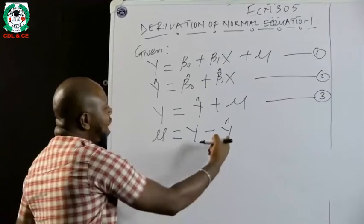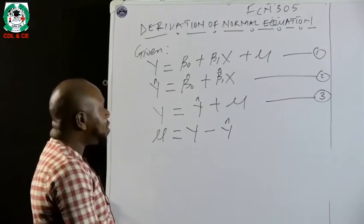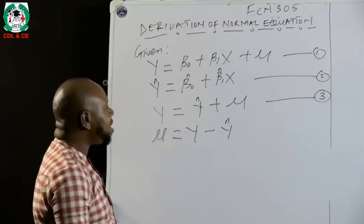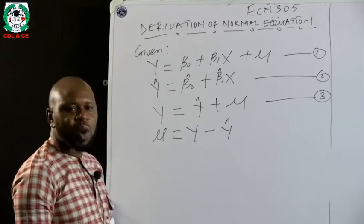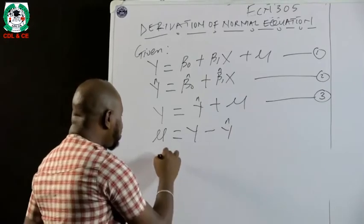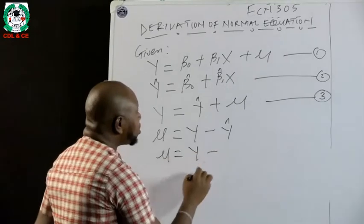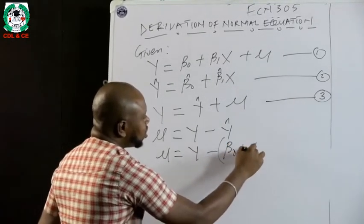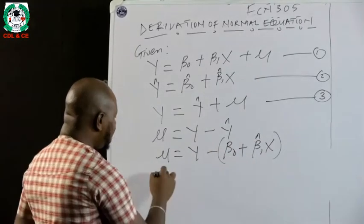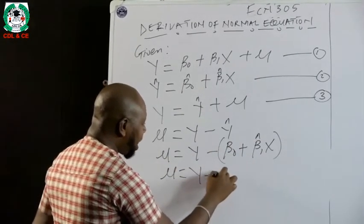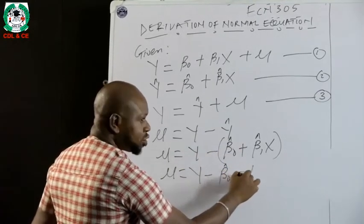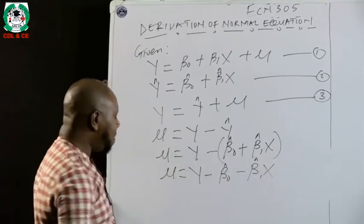Recalling that Y-hat equals beta-naught estimate plus beta-1 estimate times X from equation two, we substitute: U equals Y minus (beta-naught estimate plus beta-1 estimate times X). Opening the brackets: U equals Y minus beta-naught estimate minus beta-1 estimate times X.